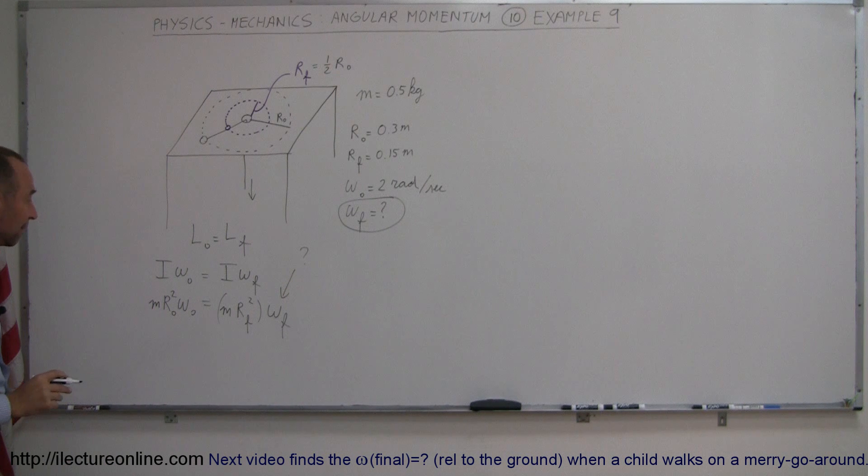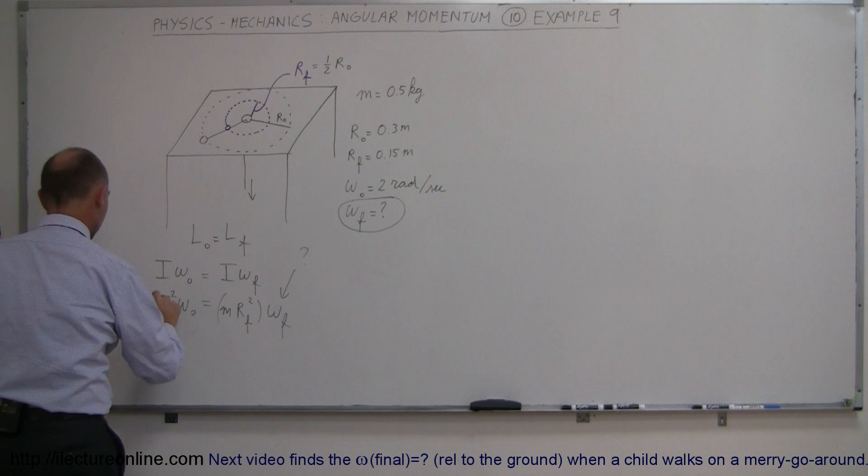We're looking for the final angular velocity. Now notice on both sides of the equation we have an m so the m definitely cancels out.